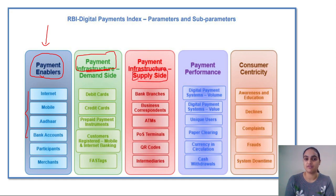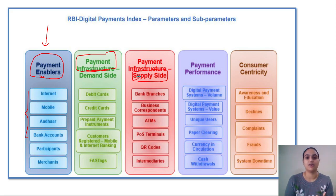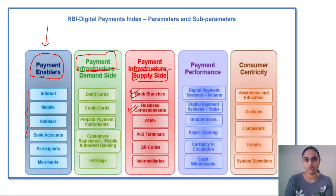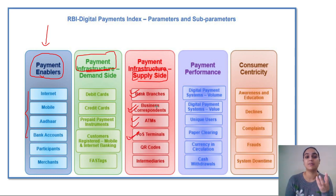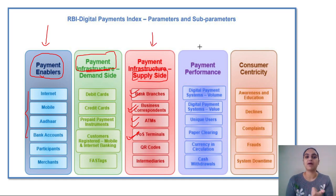Payment Infrastructure Supply Side Factors are those who provide these debit cards, credit cards, and PPI instruments — the bank branches, business correspondents in rural areas where banks cannot reach customers, ATMs, point-of-sale terminals, QR codes, and various intermediaries.